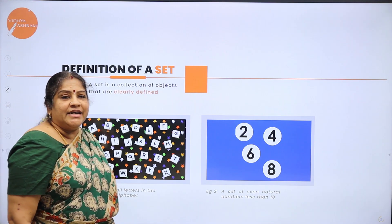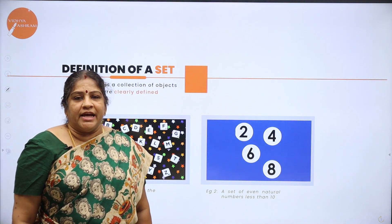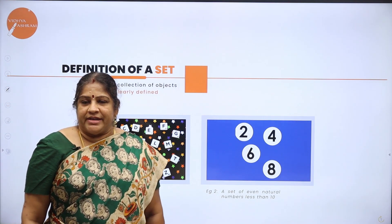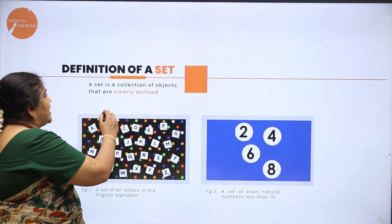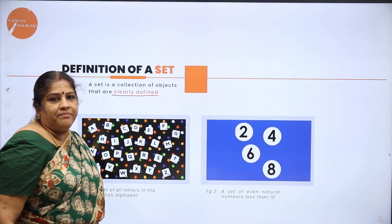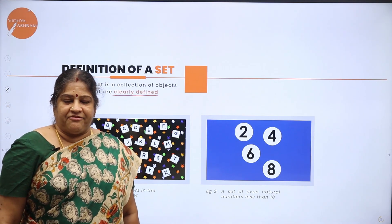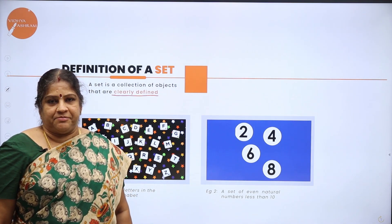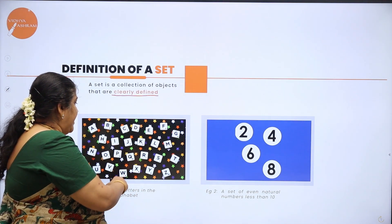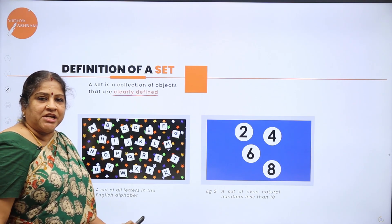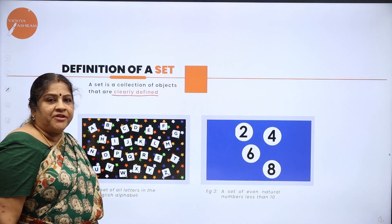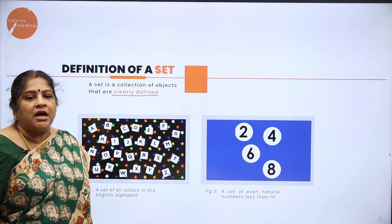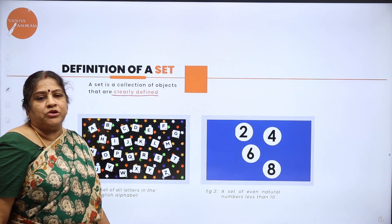First, definition of a set. 'Set' is a common English word which denotes a group or a collection. So in mathematics, it is defined as a collection of objects that are clearly defined. 'Clearly defined' means well defined or universally accepted. For example, here we have a collection of letters from the English alphabet. When I say letters from the English alphabet, it is universally accepted as the letters A, B, C, D, etc., up to Z. There is no contradiction to this idea.